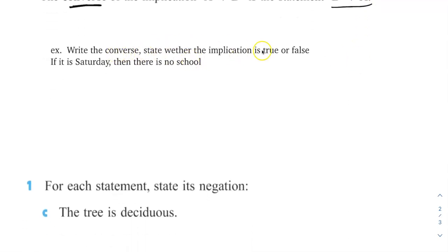Let's look at a couple examples. Write the converse, say whether the implication is true or false. If it is Saturday, then there is no school. So we have if Saturday, then no school. Implication is Saturday implies no school. You can say if it's true or false. In general, I say this is a true statement for most high schools. On Saturday, no school. In general, like, high school idea. Then this is the converse of it.